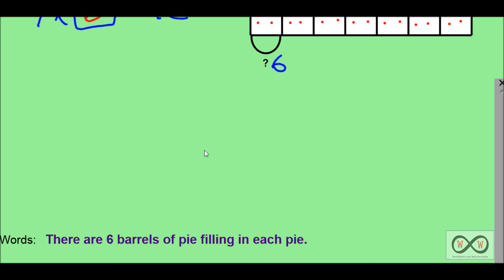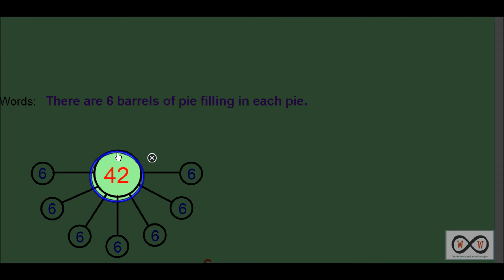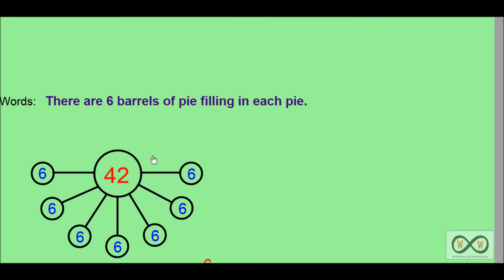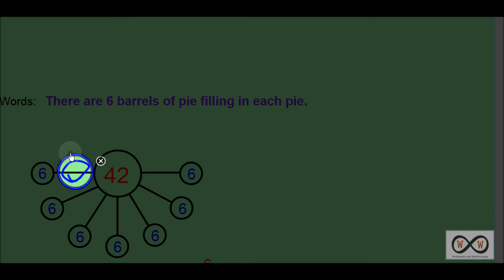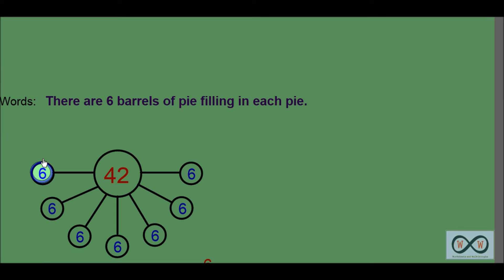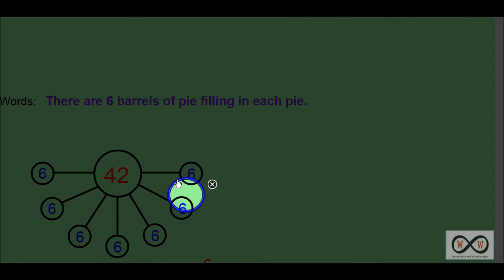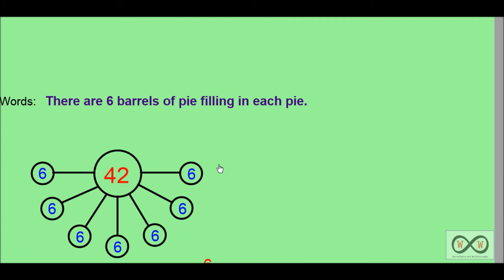You may have also shown your work using a number bond. We have 42 — the number of barrels of pie filling — shared amongst seven pies. If we had six in each pie, we could skip count: six, 12, 18, 24, 30, 36, 42. Yes, that checks out with the number bond.